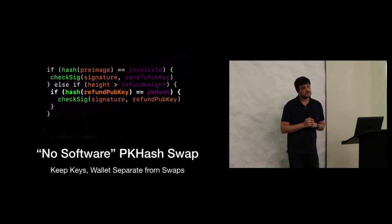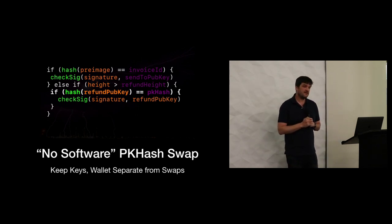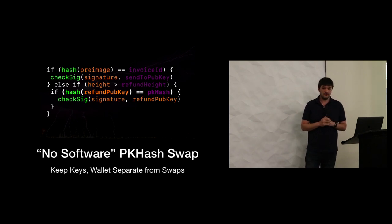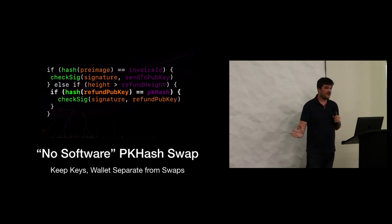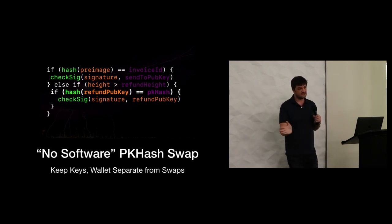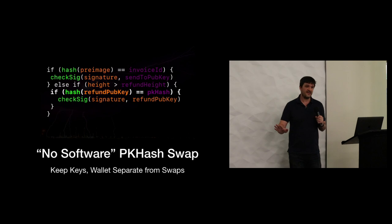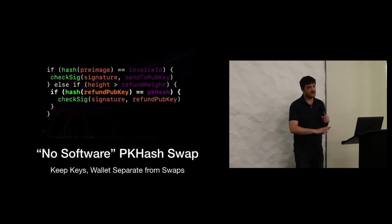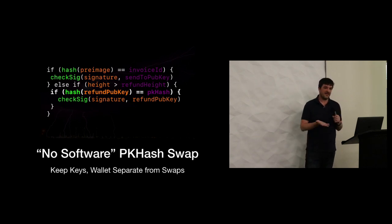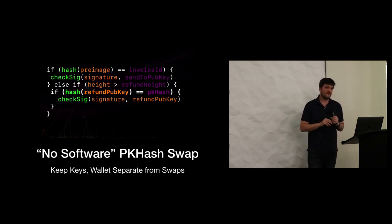A question about compatibility with Lightning splicing: the speaker noted splicing is actually the ideal situation. Once you have splicing, you can pay out to a chain address without stopping the channel. However, you can't splice a Litecoin input into a Bitcoin channel, so cross-chain scenarios still require submarine swaps.